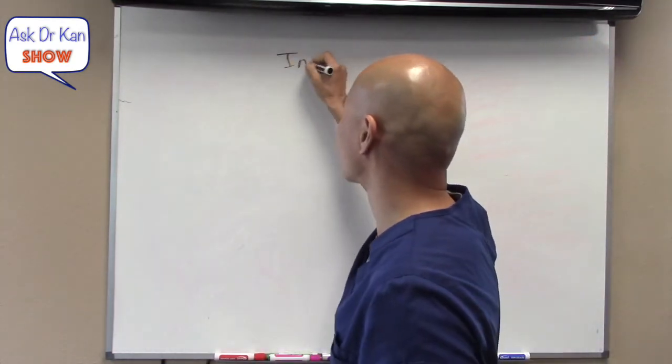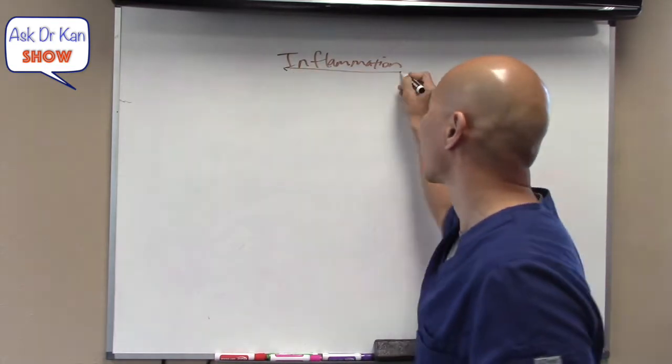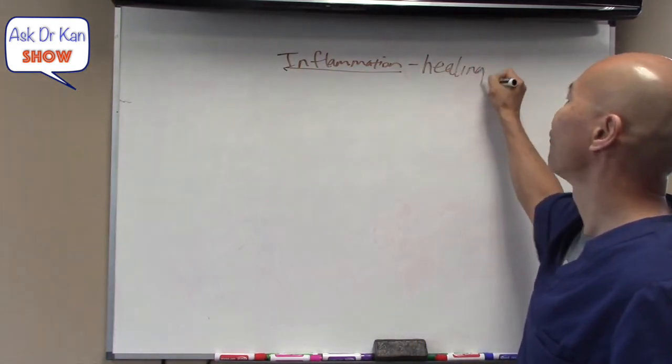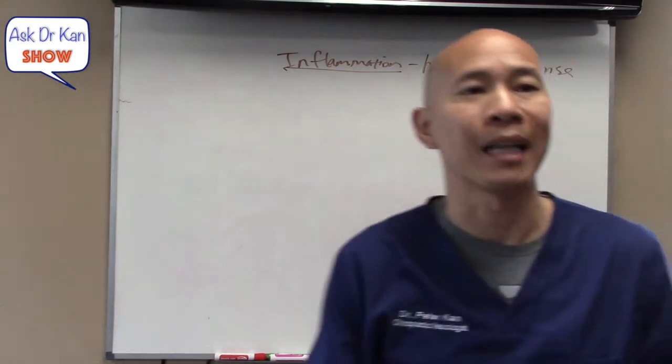Let's talk about the mechanism of autoimmunity. Inflammation is the fuel that starts it. Inflammation is basically a sign of injury. When your tissues become injured, inflammation is the healing response. People make inflammation out to be the bad guy, but inflammation is how your body heals.